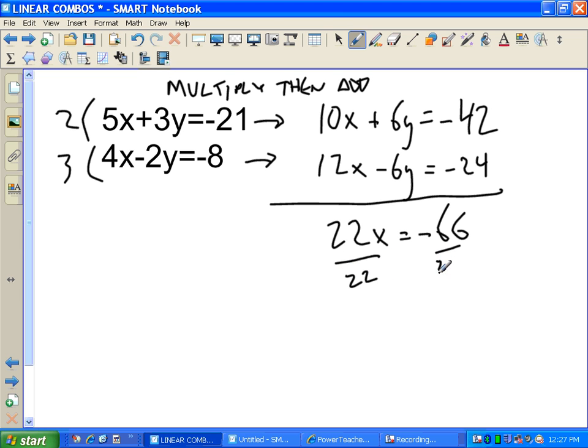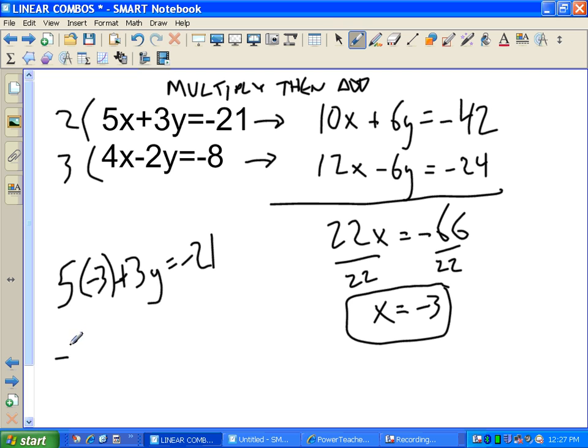Figure out what y is. Which equation is going to be nice? I guess we'll go with this one on the top. 5 times negative 3 plus 3 times y equals negative 21. No matter which equation we pick, we're going to get the same y value. That's the nice part. Just pick whatever's easiest to work with. Negative 15 plus 3y equals negative 21. Add 15 to both sides. I end up with negative 6. Y equals negative 2.